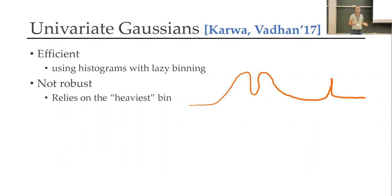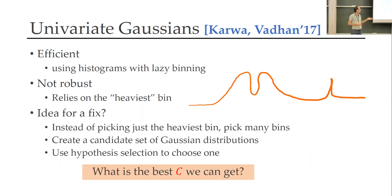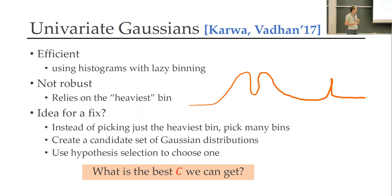You can make this robust by not looking at just the heaviest bin but at multiple bins. Someone still needs to do the computation to find the best constant C achievable from this approach — that's a nice open question.